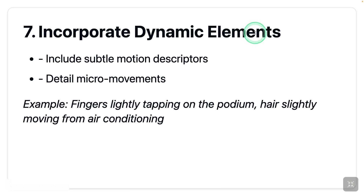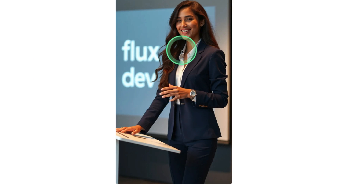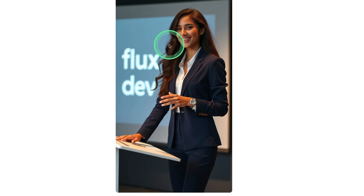Next: incorporate dynamic elements — include subtle motion descriptors and detailed micro-movements. Example: 'fingers lightly tapping on the podium, hair slightly moving from air conditioning.' Again, we are bringing in fingers, which could cause an issue. Let's try that — this is really nice: hand on the podium and hair flying from the air conditioning. This is getting good.